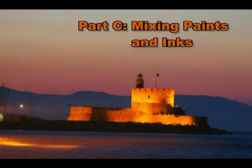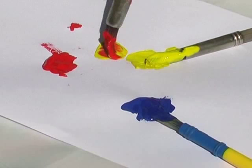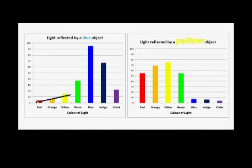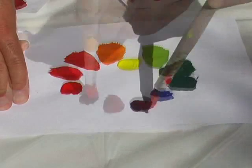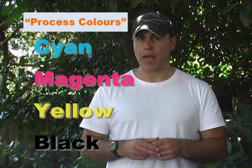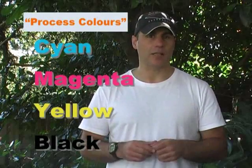In part C, we show that the primary colours of paints and pigments are red, yellow and blue, and explain why mixing paints produces new colours. We also look into the four so-called process colours, which are used in industrial printing.